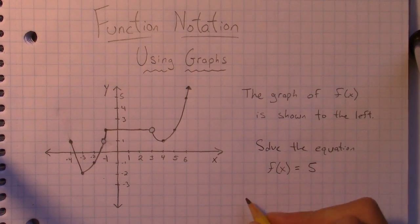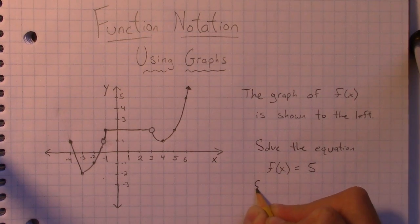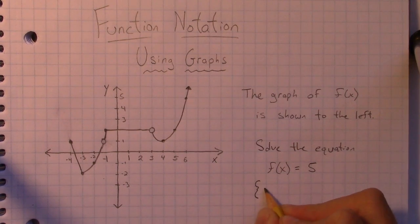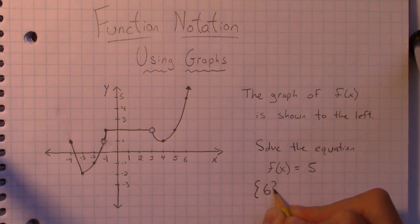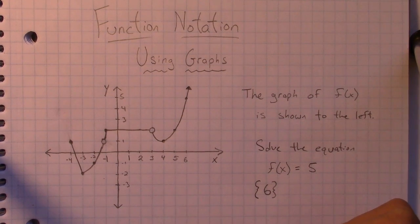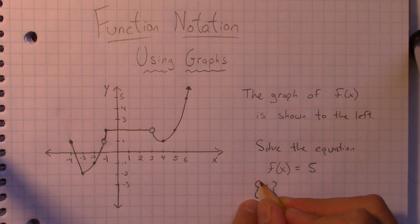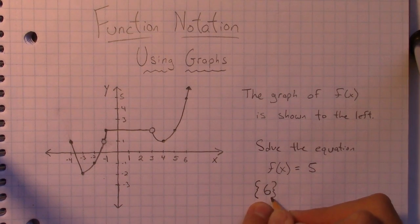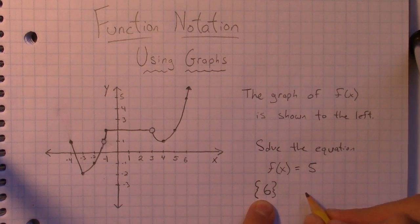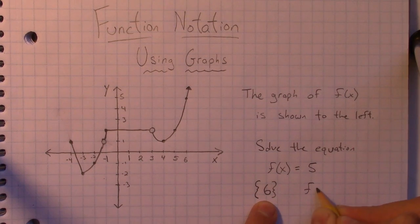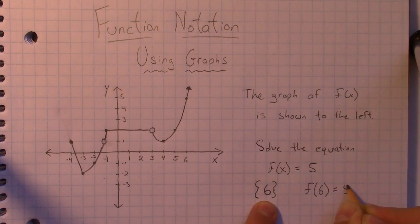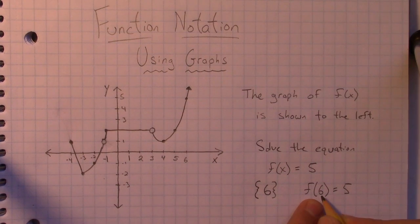Well, you could just write the answer as a set of numbers just {6}, right? You will see that as a solution, the set of numbers, these little curly brackets here represent a set. You could also see, it really just means this, f(6) equals 5, right? When I plug in x equals 6, I get an output of 5.